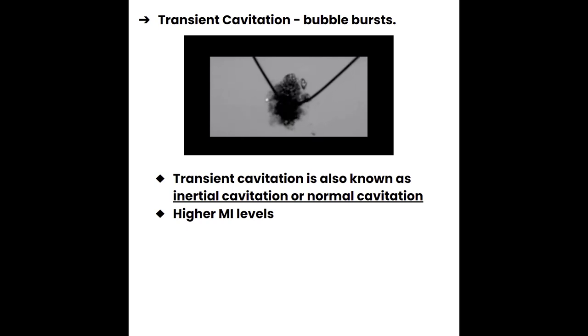The energy that is released by a bubble undergoing stable cavitation is much lower than a bubble that experiences transient cavitation. Now in transient cavitation, it's important to know that this is where the bubble bursts. We expect to see an implosion of the bubble. And when doing so, the risk for bioeffects increases greatly. Transient cavitation is also known as inertial cavitation or normal cavitation. Those are synonyms for transient cavitation. And they are going to occur when we see higher mechanical indice levels. Typically what happens is that the high ultrasound energy is going to cause the small gas bubbles to burst.